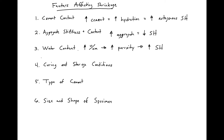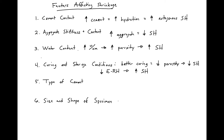The curing and storage conditions are also going to affect shrinkage. If we have better curing, we're going to have a lower porosity, and this is going to decrease our shrinkage. With regard to storage conditions, if we have a drier climate or a lower external relative humidity, this is going to lead to increased drying shrinkage, because more water is going to want to leave the member and equilibrate with the external relative humidity.